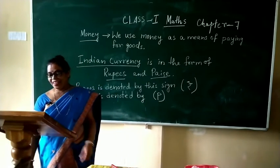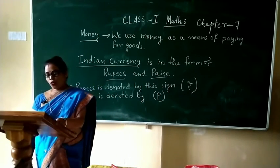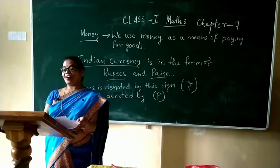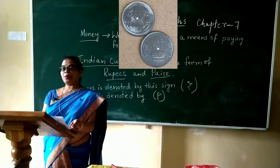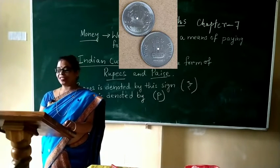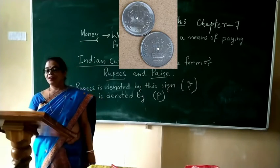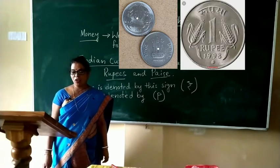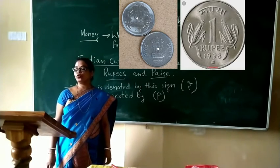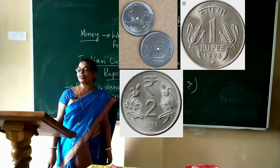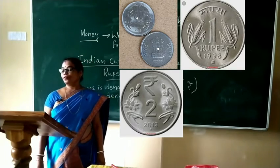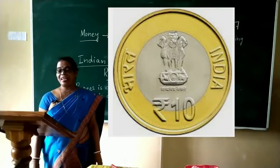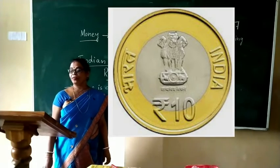In India, the coins that we have are 50 Paise coins, 1 Rupee coins, 2 Rupee coins, 5 Rupees coins, and 10 Rupees coins.